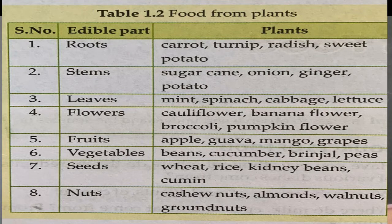The next part of the plant is leaves. We can see that leafy vegetables we get from the leaves. For example, spinach and cabbage we can get from the leaves.